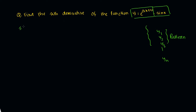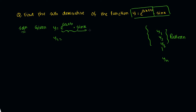Let's solve it. Look at the solution. The given function is y equal to e to the power ax plus b into sin x. Differentiating this function the first time with respect to x, we get y1. It is a product of two functions.